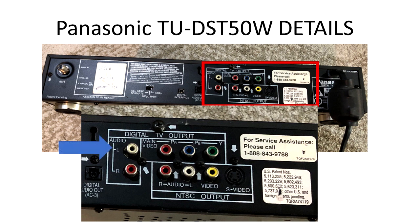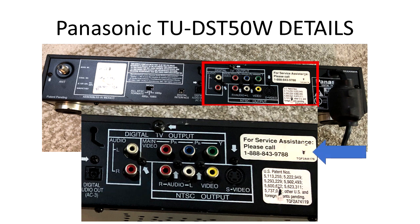It had a bunch of RCA connections for video — there was no HDMI at this time, so you needed five separate cables: two for audio and three for video. Additionally there was S-Video and composite video to work with standard definition televisions. There was also a phone number to call for help if you needed it.